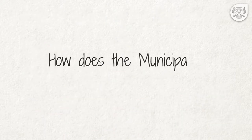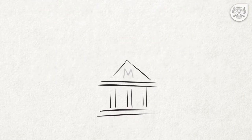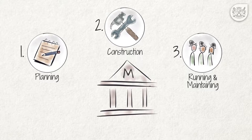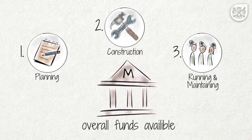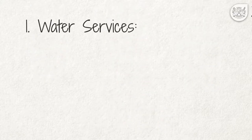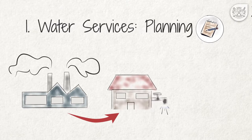How does the municipality spend the money it has on services? The municipality has to take many different steps in order to provide services. Each step has costs associated with it. These costs get paid from the overall funds available to the municipality. Let us use water services as a practical example. Firstly, the municipality needs to plan the exact nature of the water supply system and how much it will cost.